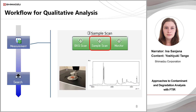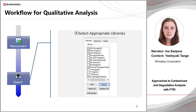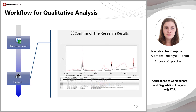After the background scan is complete, the sample is placed on the ATR prism and compressed by the sample clamp. Now we can perform the sample scan. The infrared spectrum, shown on the right, is obtained. Then we perform a search for the obtained spectrum in the selected libraries. The libraries are categorised by measurement methods, or by sample types, such as organic substances or food additives. It's important to select the appropriate libraries. After the spectrum is searched, matching spectra are displayed in order of similarity. Check for the best results by referring to the numerical scores and the peak shape.